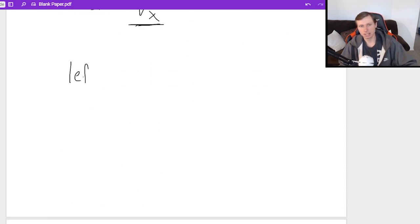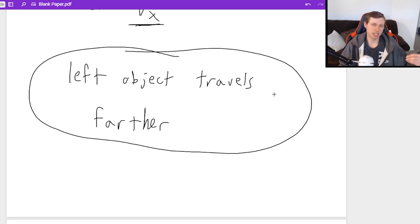The one on the left is going to travel farther because its velocity is greater. So the answer is left object travels farther. And if we wanted the exact distance, I'd have to give you numbers. But that's not the point of the question. The point is just to understand this concept.